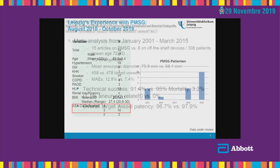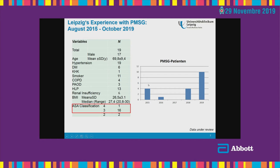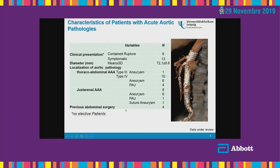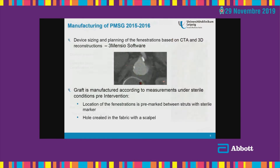That's why we started this program in Leipzig in 2015. We began with four patients per year, then expanded, and this year we have included 10 patients. Altogether, we have 19 patients. The ASA classification is predominantly 3 and 4, with two patients who are ASA 2. The indication for treatment was contained rupture in six cases and symptomatic aneurysm in 13 patients. We have treated pretty large aneurysms — 72 mm in diameter — extending from type 3 thoracoabdominal to juxtarenal. We have not treated any elective patients with this graft.